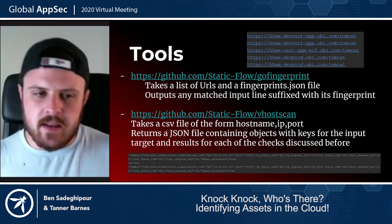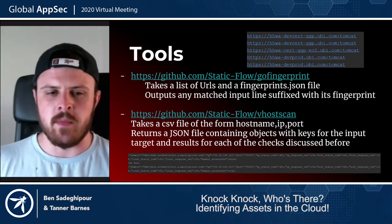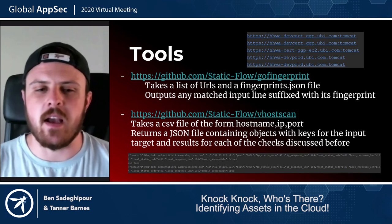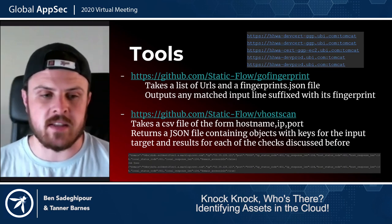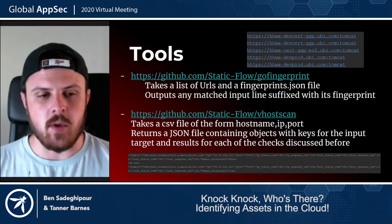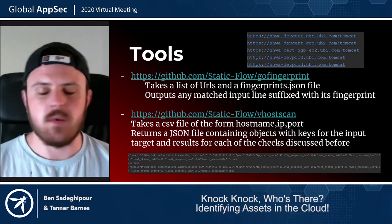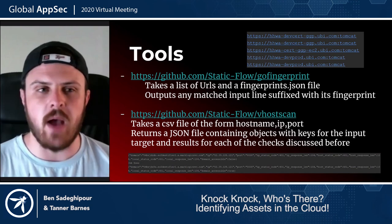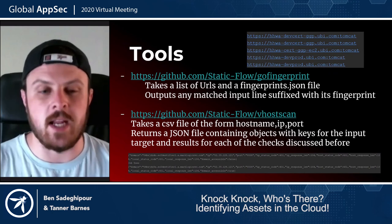The second tool is vhostscan. It takes a CSV file of the form hostname, IP, and port, and returns a JSON file containing objects that have the input target and the result for all three checks: the status code and response length for — IP with host header of IP, IP with host name of the domain, and IP with host name of localhost.